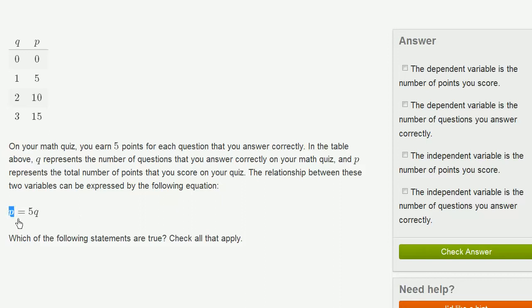And typically, the convention is to have the dependent variable be equal to some expression involving the independent variable. And you see that right over here. P is dependent on what happens to Q. Depending on the number of questions, you multiply it by 5 and you get P. So the dependent variable is the number of points you score.